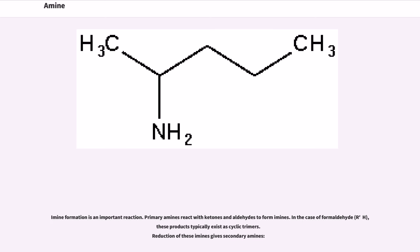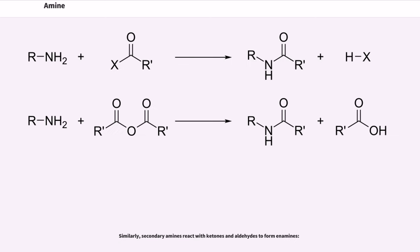Imine formation is an important reaction. Primary amines react with ketones and aldehydes to form imines. In the case of formaldehyde, R2C=O, these products typically exist as cyclic trimers. Reduction of these imines gives secondary amines. Similarly, secondary amines react with ketones and aldehydes to form enamines.